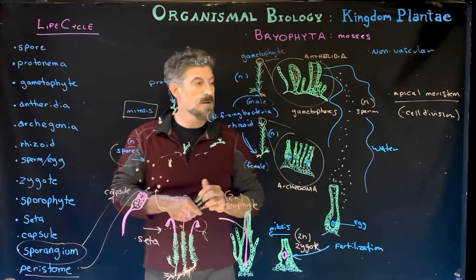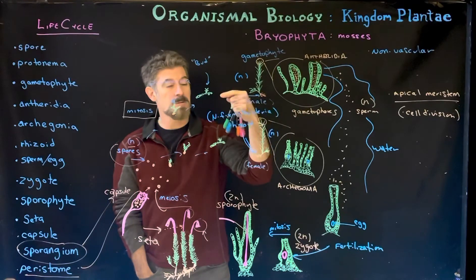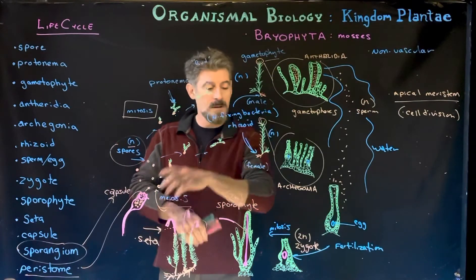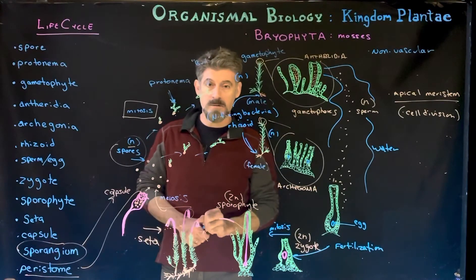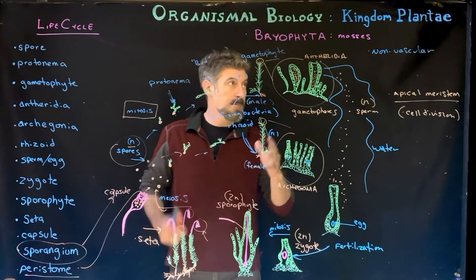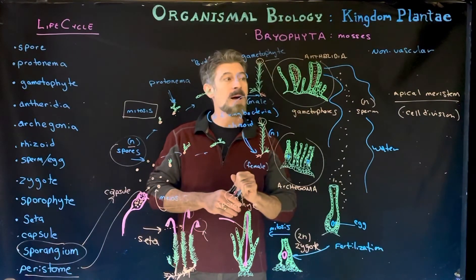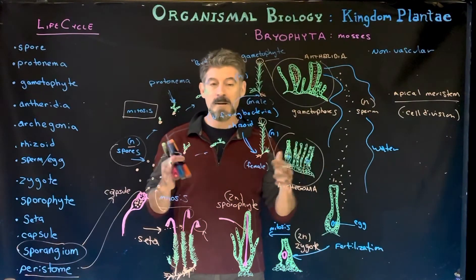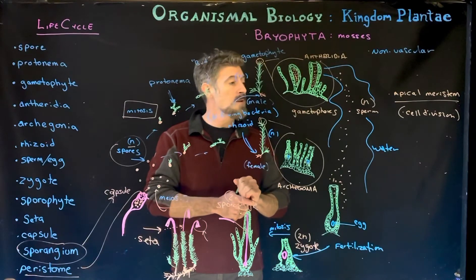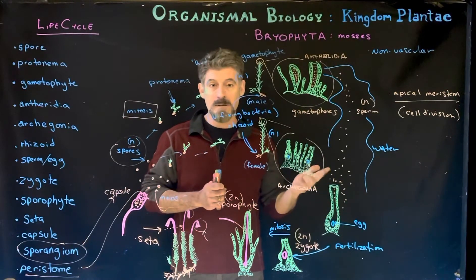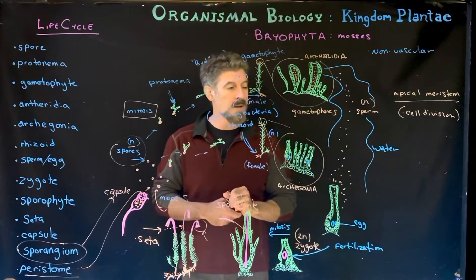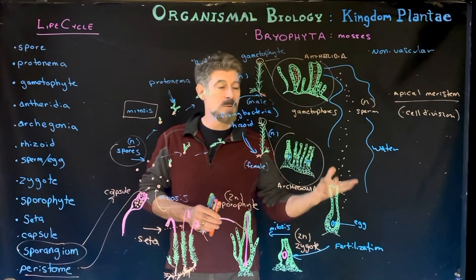To summarize the key terms: the rhizoid is a holdfast-type structure — not truly a root — and one of its significant features is association with nitrogen-fixing cyanobacteria. Mosses can inhabit a variety of habitats, typically wet ones — they crust over rock surfaces, grow on other plants, or on top of soil. They don't require the same root structures as other plants and can get nutrients through their nitrogen-fixing bacterial associations.